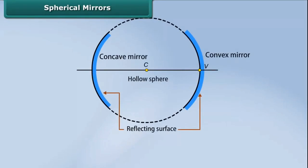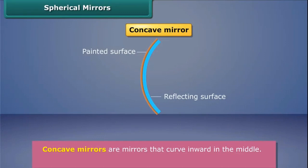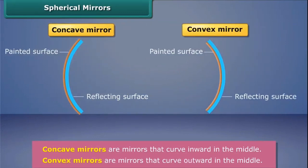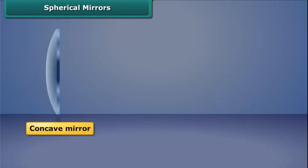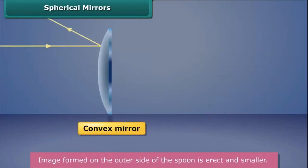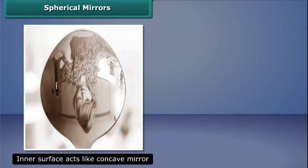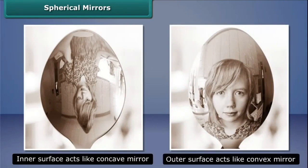Spherical mirrors have curved reflecting surfaces and are also called curved mirrors. There are two kinds of spherical mirrors: concave mirror and convex mirror. Concave mirrors are mirrors that curve inward in the middle, whereas convex mirrors are mirrors that curve outward in the middle. Concave mirrors reflect light from their inner surface like the inside of a spoon, while convex mirrors reflect light from their outer surface like the outside of a spoon. Hence, the inner surface of a spoon acts like a concave mirror while its outer surface acts like a convex mirror.